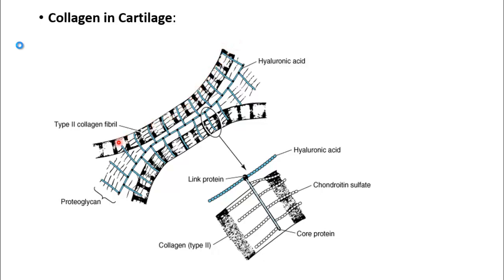This slide depicts the extracellular matrix components. The rod-like fiber shown here is collagen, this segment represents hyaluronic acid, this is mainly the proteoglycans, and this particular segment also contains the specialized proteins. So altogether, this extracellular matrix consists of structural proteins, specialized proteins, and proteoglycans.